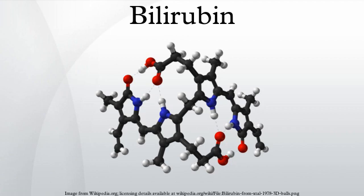This allows the excretion of unconjugated bilirubin in bile. Some textbooks and research articles show the incorrect geometric isomer of bilirubin. The naturally occurring isomer is the Z isomer.